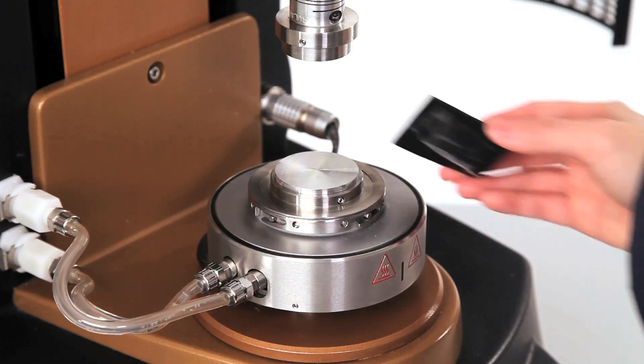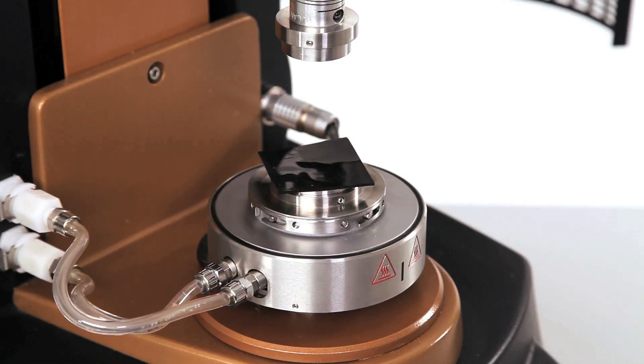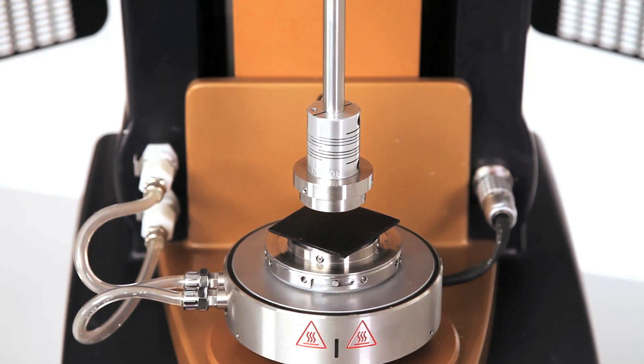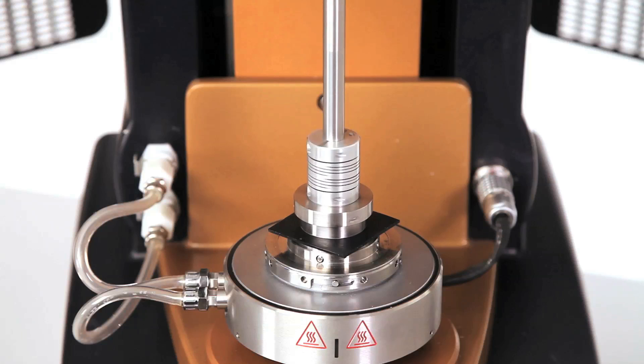The Triborheometry accessory taps into the rheometer's innate ability to precisely control and accurately measure both the rotational speed and the axial force. The instrument brings two surfaces into contact, controls the load force, and then applies rotational motion to one of the surfaces.